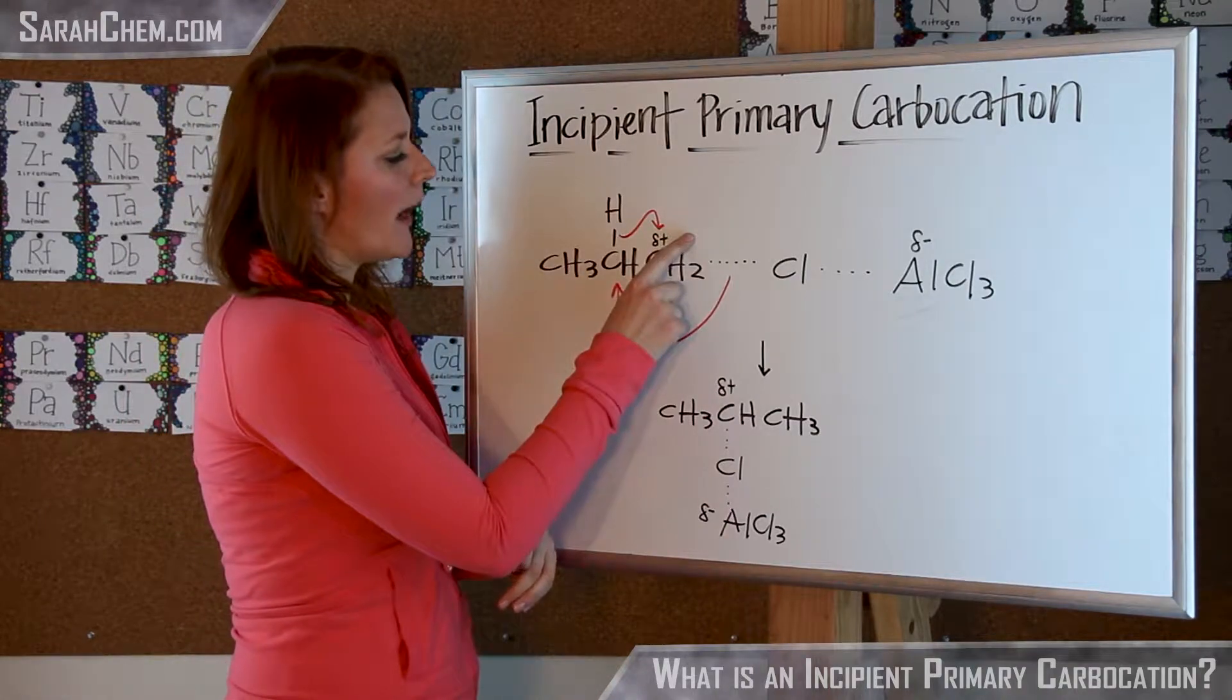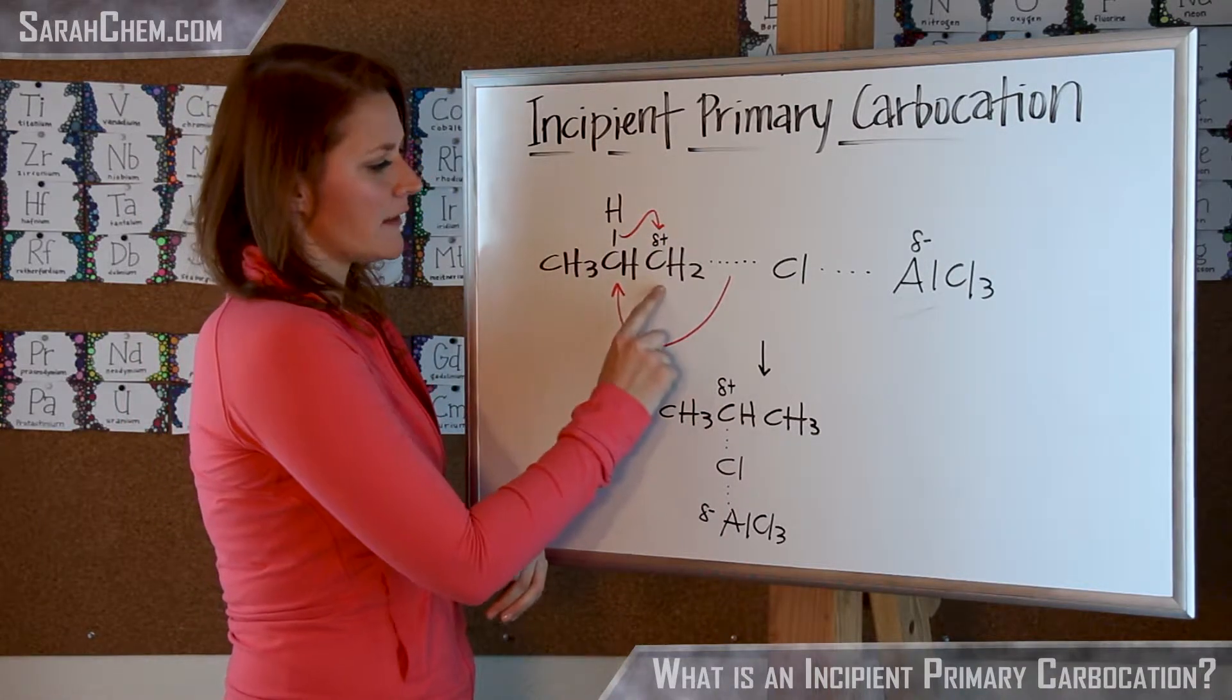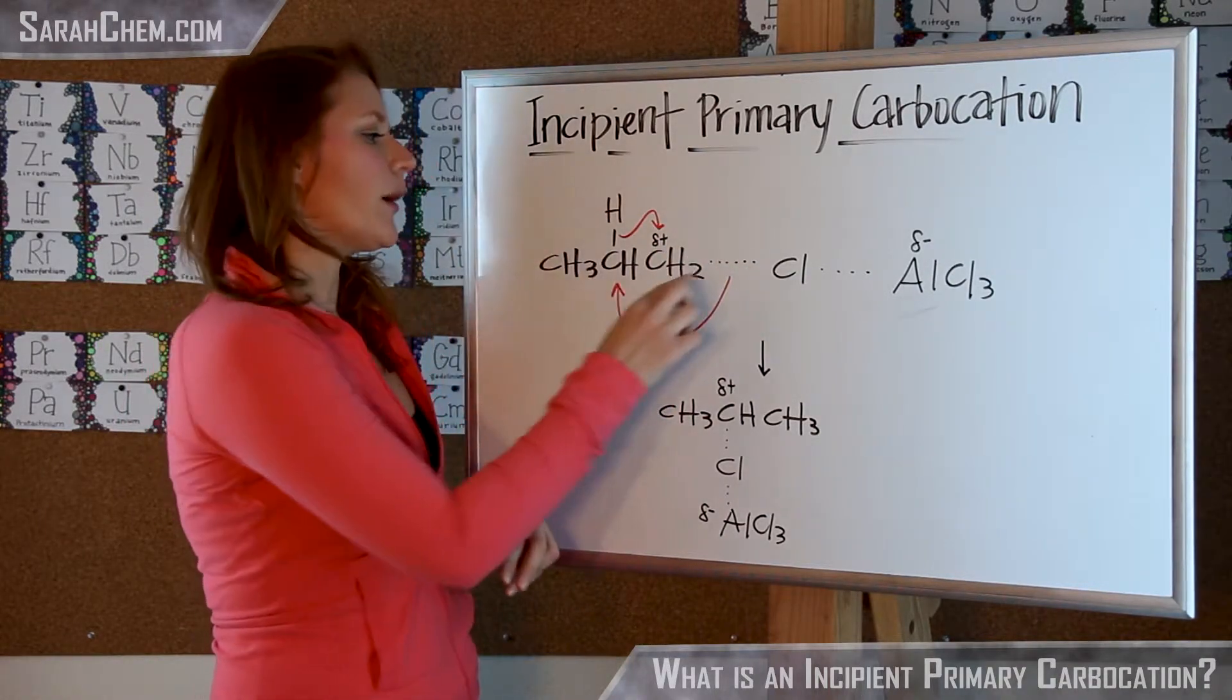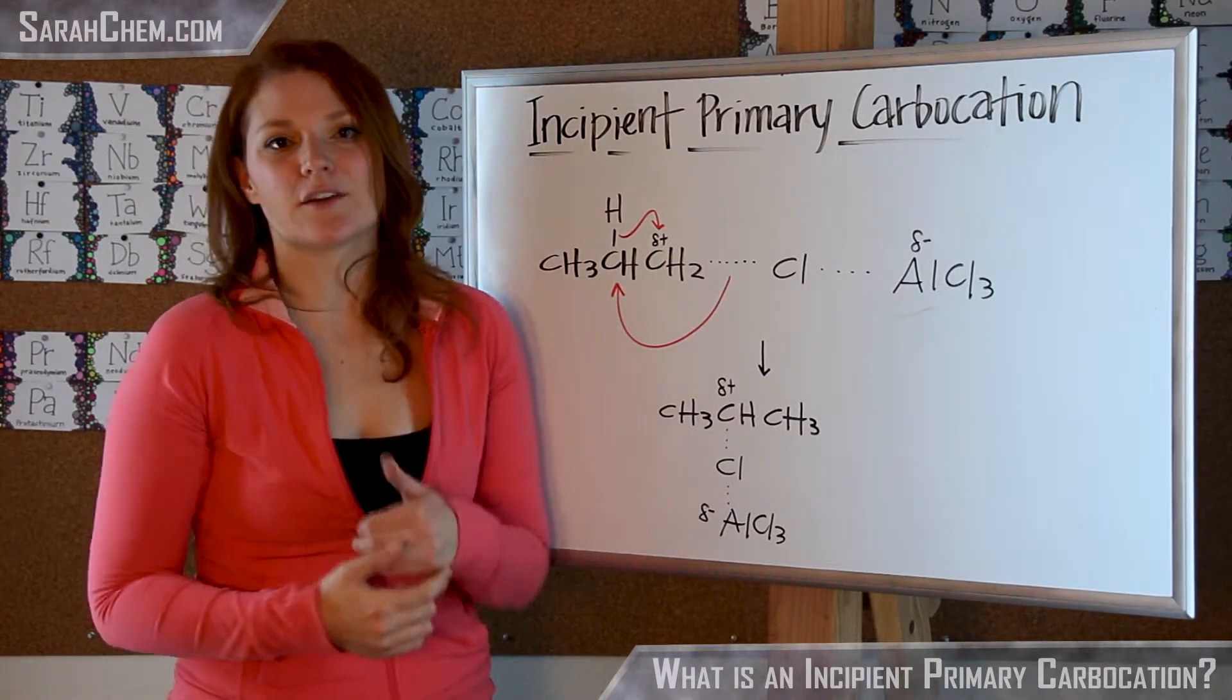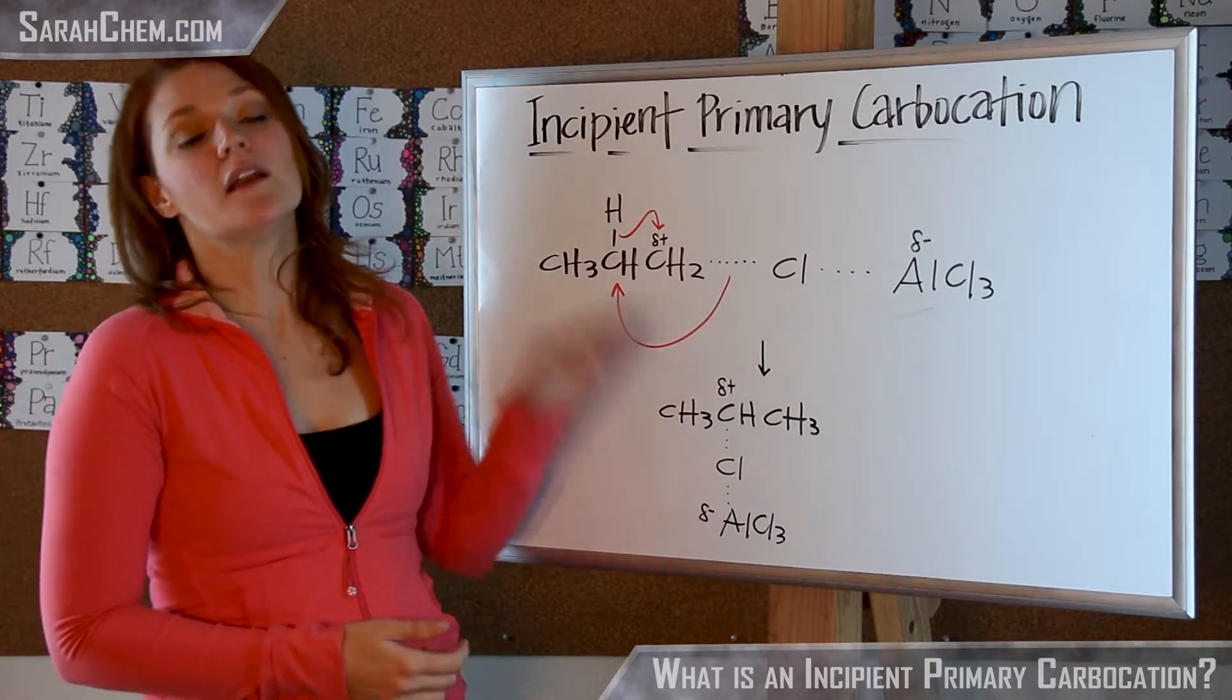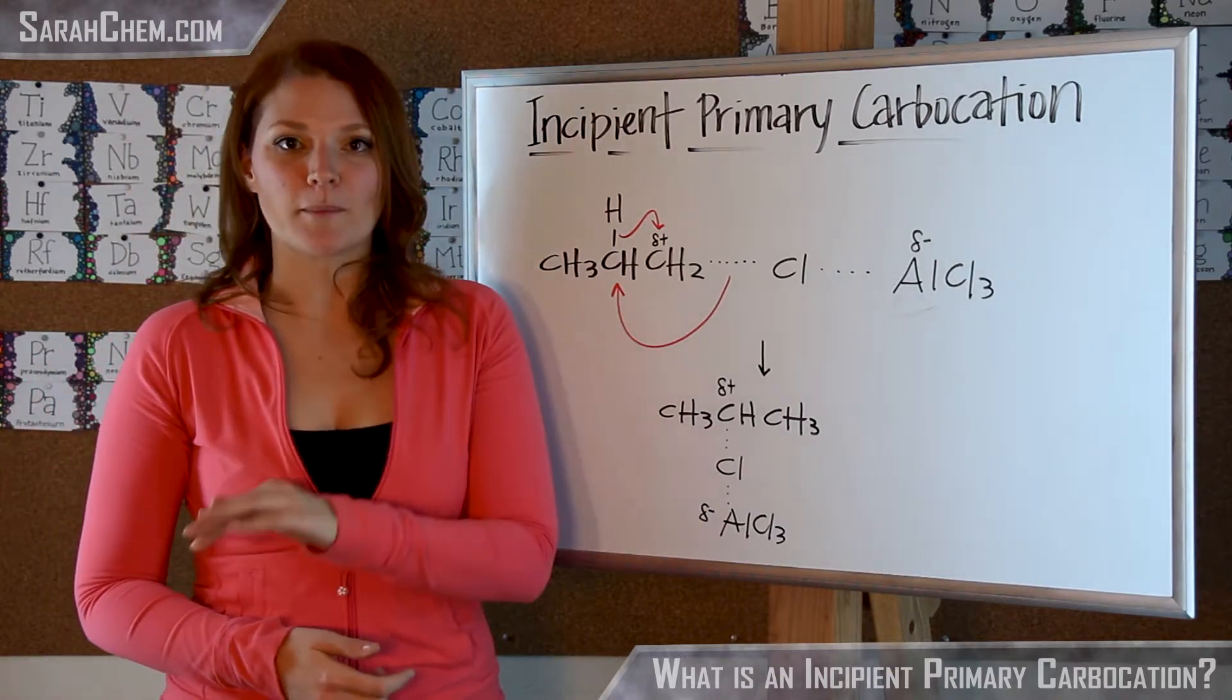So what you'll see is you can do a 1-2 hydride shift where this can shift over onto this carbon, and then this pseudo-bond can move over onto this carbon here. And now we've got our secondary carbocation, and that's what's going to be part of the major product that's formed.